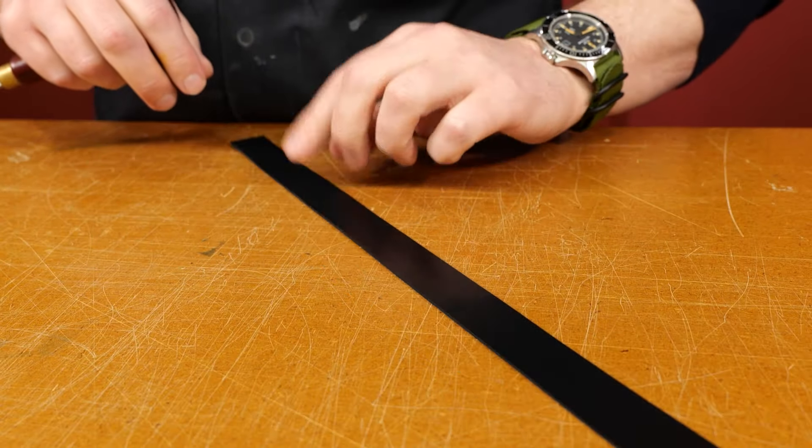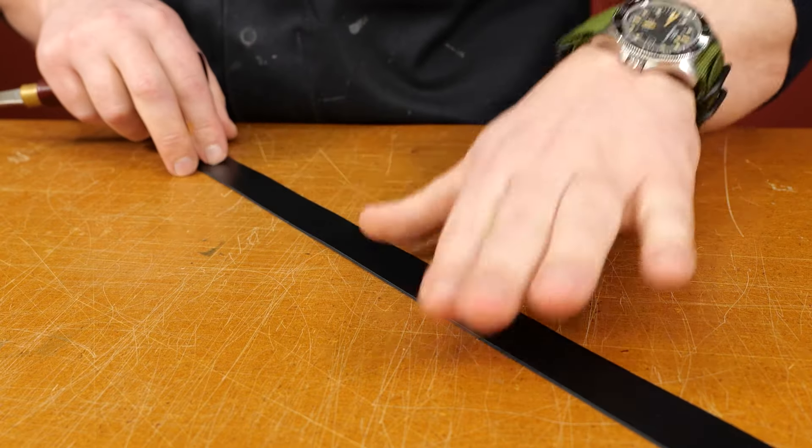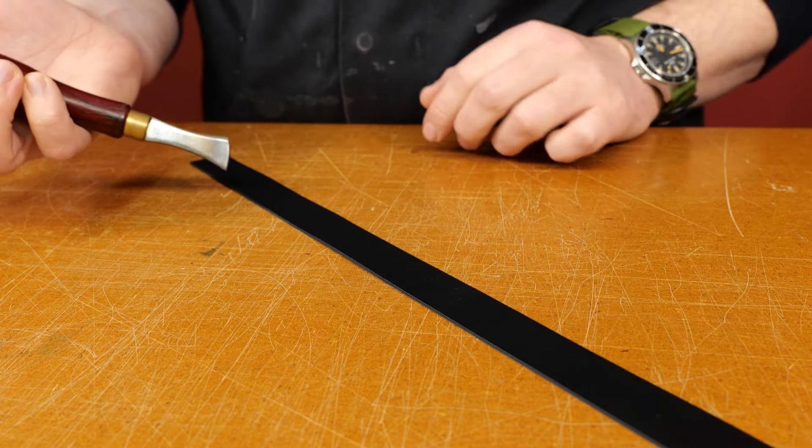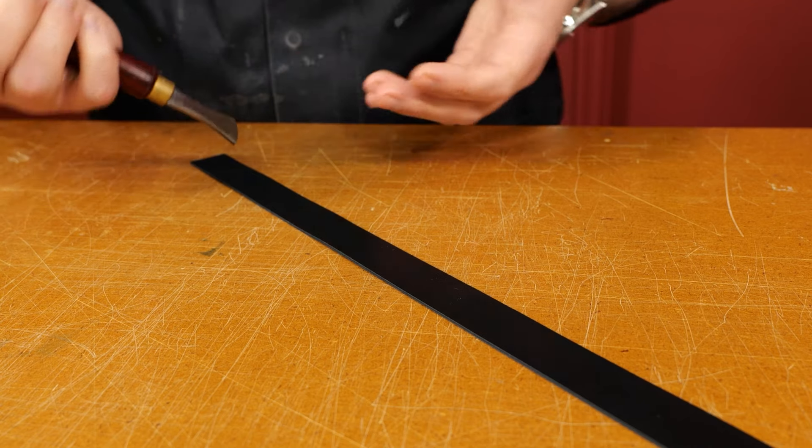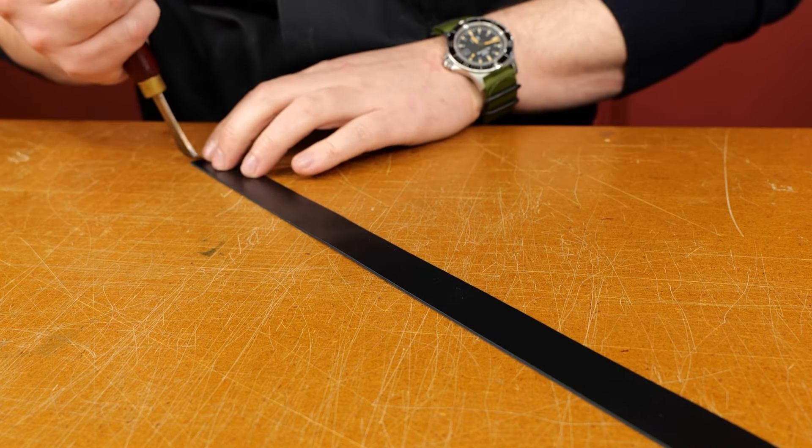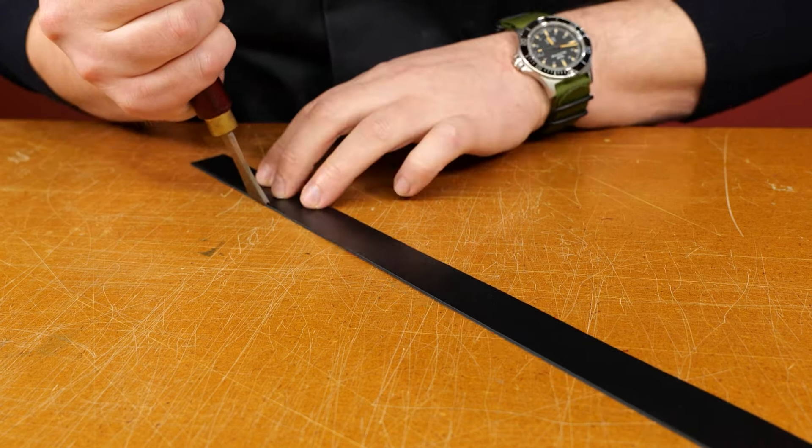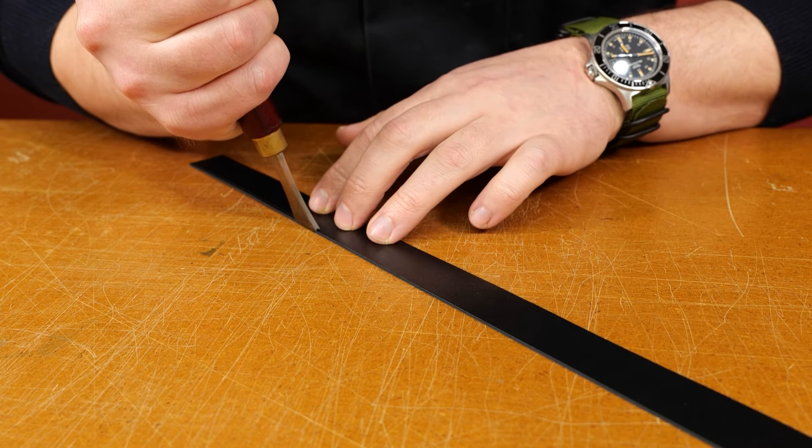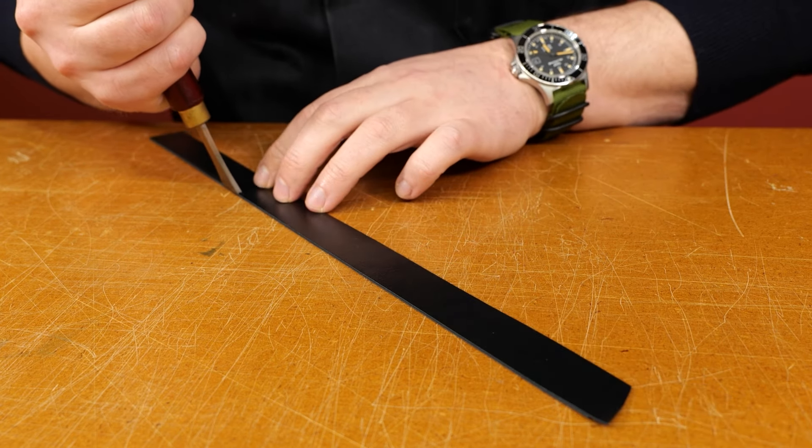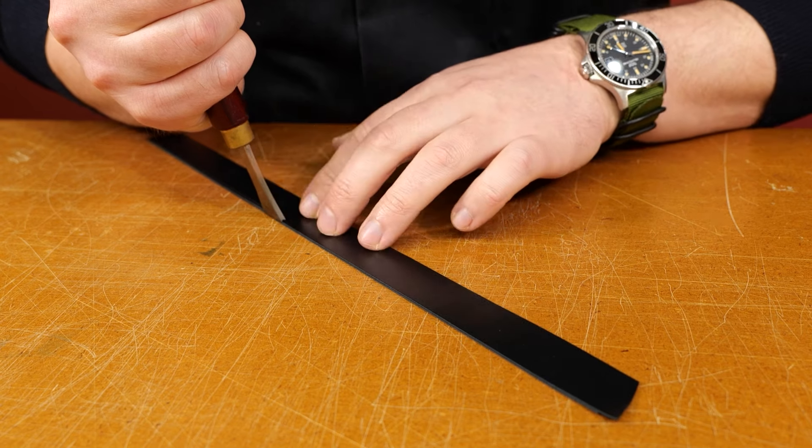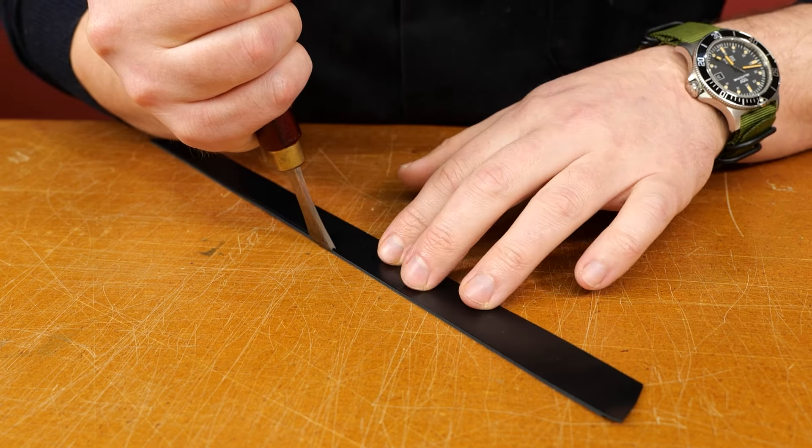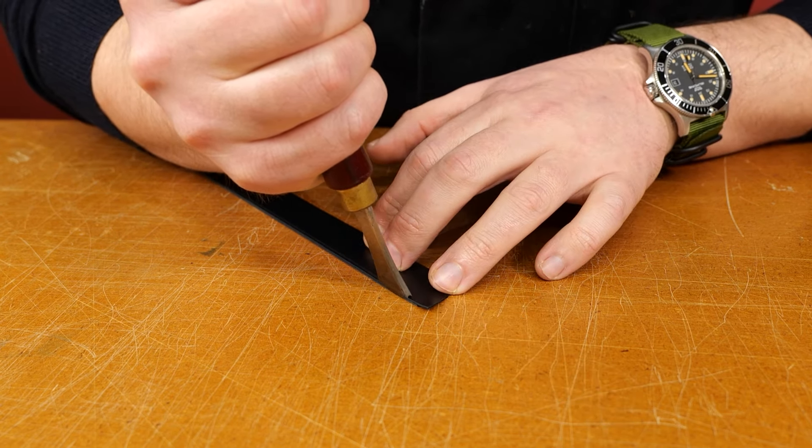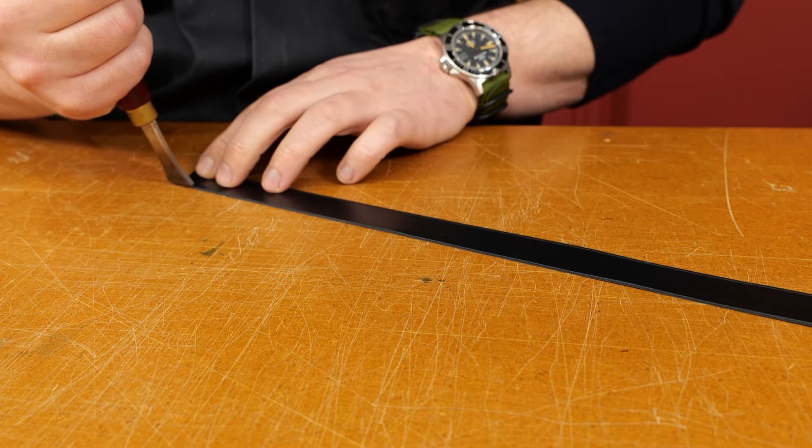And now that we've cut it, we want to prepare the good side, not the inside, the good side that you've chosen by taking a creaser. I'm using a 1.5. 1 to 1.5 is going to be about right for this. It's going to improve the look of the edge, frame our stitches, and also give us something to stitch up against as well. All the way to the very end. Turning it around, same on the opposite side.